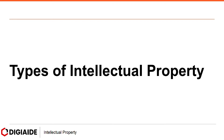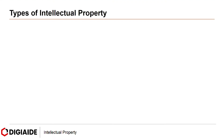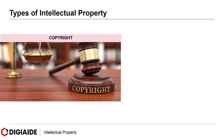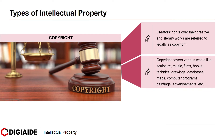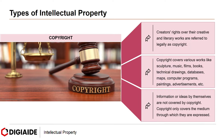Moving on to Types of Intellectual Property. Let's start with the first one, Copyright. Creators' rights over their creative and literary works are referred to legally as copyright. Copyright covers various works like sculpture, music, films, books, technical drawings, databases, maps, computer programs, paintings, advertisements, etc. Information or ideas by themselves are not covered by copyright. Copyright only covers the medium through which they are expressed.